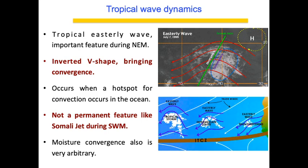A tropical easterly wave is a very important feature during Northeast monsoon — it is an inverted-V shape wave bringing convergence on the right side as it moves along its axis, with divergence on the front. As it moves from east to west, convergence occurs. If a tropical easterly wave forms in the Bay of Bengal, it will definitely bring rain to Tamil Nadu, Andhra, and interior India. This wave occurs when a convective hot spot is present in the Bay of Bengal.